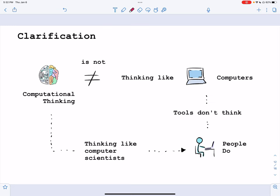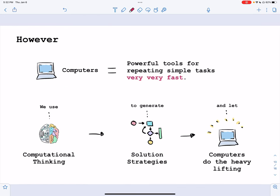I want to make one clarification. It's that computational thinking is not thinking like computers. Tools do not think. People do. Computational thinking is more like thinking like computer scientists. That said, computers are powerful tools for repeating simple tasks very, very fast. So we can use computational thinking to generate solution strategies. And finally, pass these solution strategies to computers and let computers do the heavy lifting.